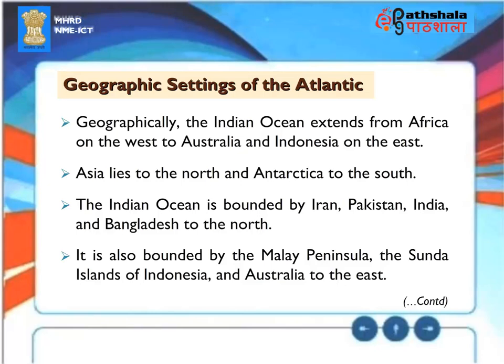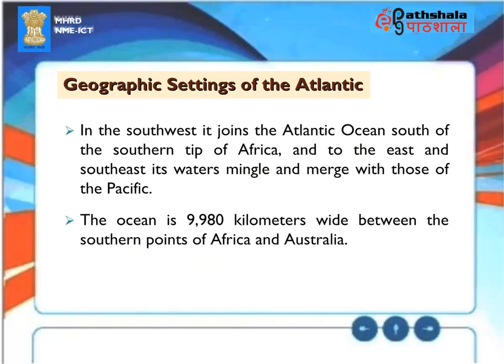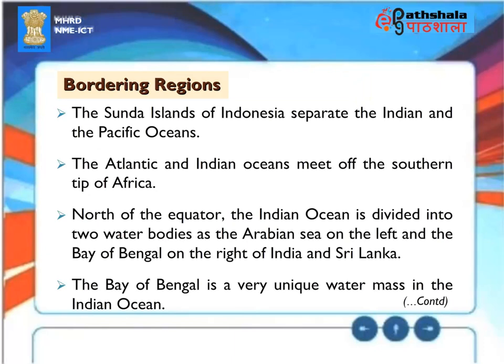Geographic Setting. Geographically, the Indian Ocean extends from Africa on the west to Australia and Indonesia on the east. Asia lies to the north and Antarctica to the south. The Indian Ocean is bounded by Iran, Pakistan, India and Bangladesh to the north. It is also bounded by the Malay Peninsula, the Sunda Islands of Indonesia and Australia to the east. In the southwest it joins the Atlantic Ocean south of the southern tip of Africa, and to the east and southeast its waters mingle and merge with those of the Pacific. The ocean is 9,980 kilometers wide between the southern points of Africa and Australia.